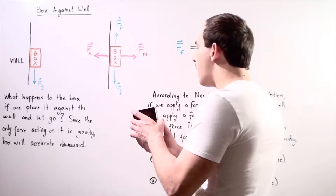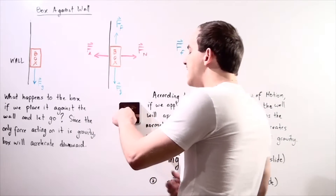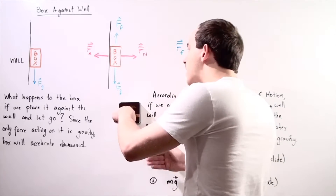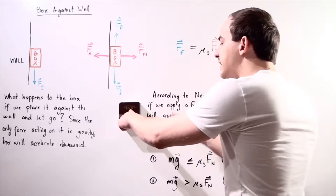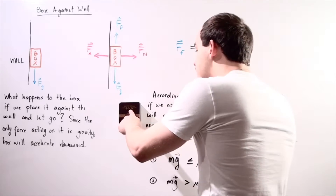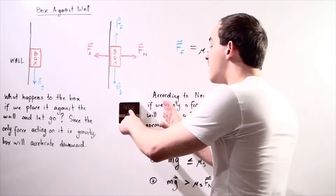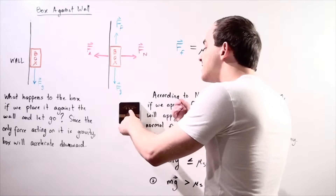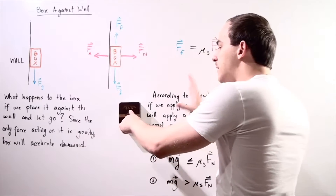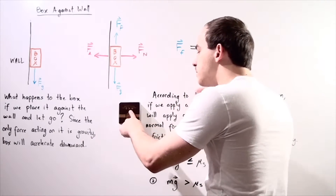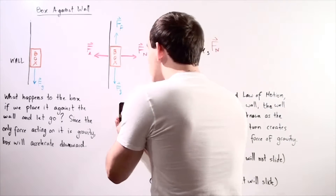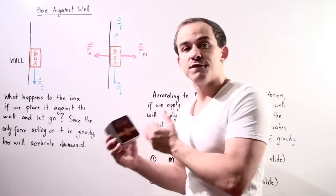Now, what happens if I take my box and apply a force against it — a force that acts perpendicularly to my wall? We see that the box does not move. Why? If my box does not move, that means there exists some force that cancels out the force of gravity. In order for my box to remain stationary, the net force must be zero, so the net force along the y-axis must be zero.